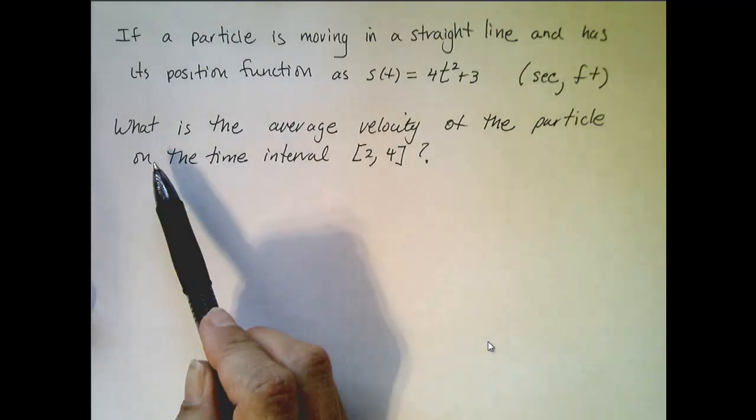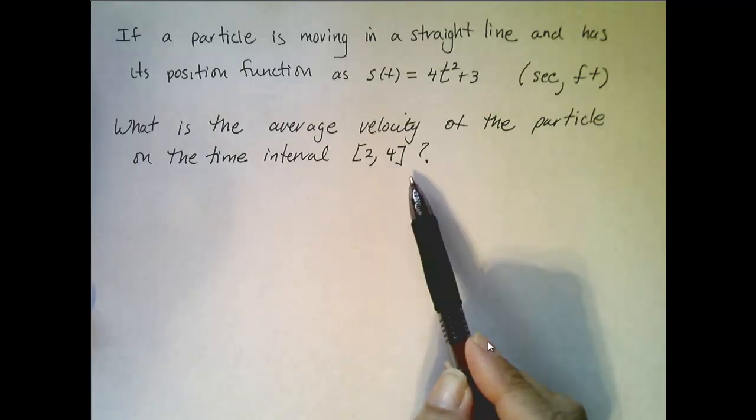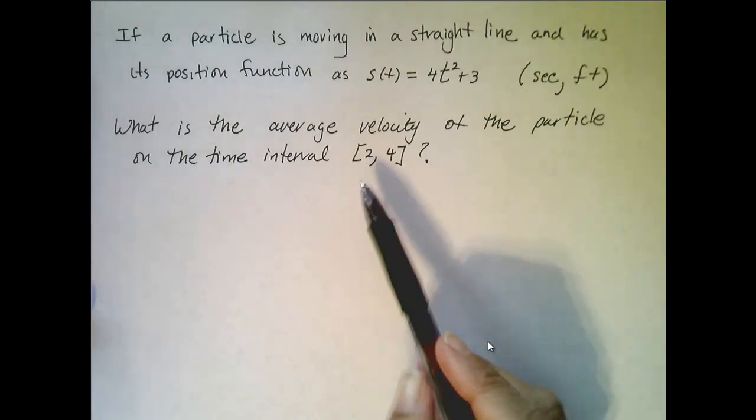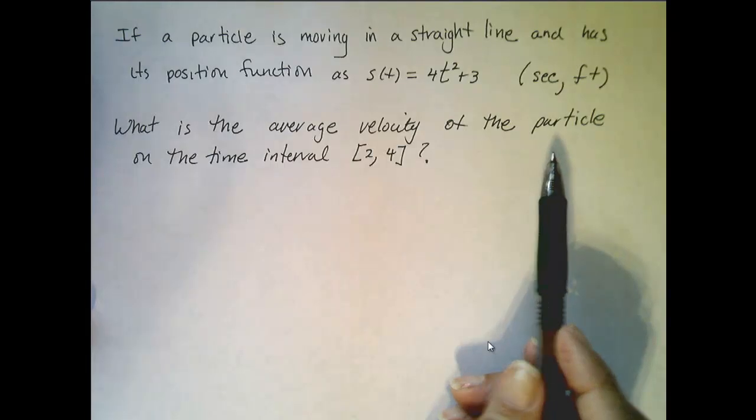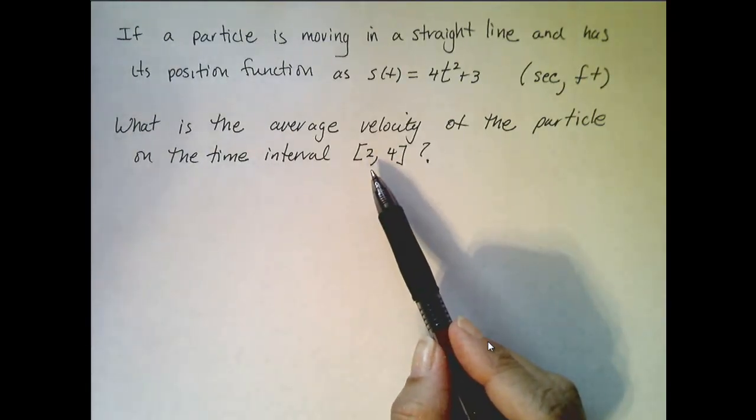So the question is, what is the average velocity of this particle on the time interval 2 to 4? So what's the average velocity of the particle as it moves on its path between the time 2 and 4?